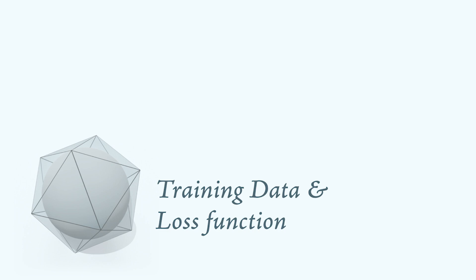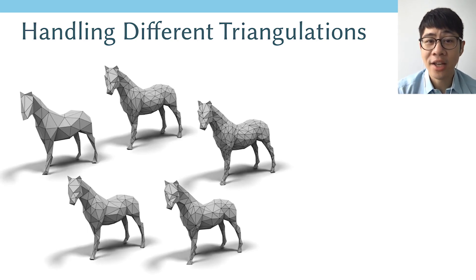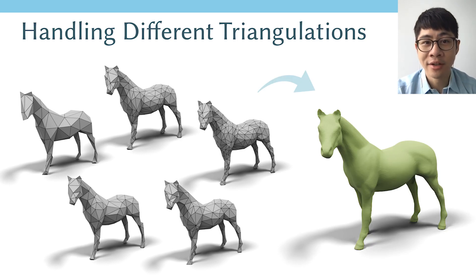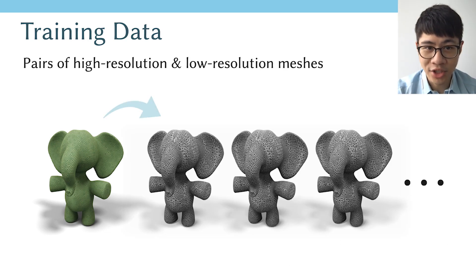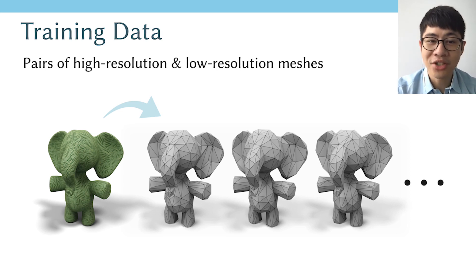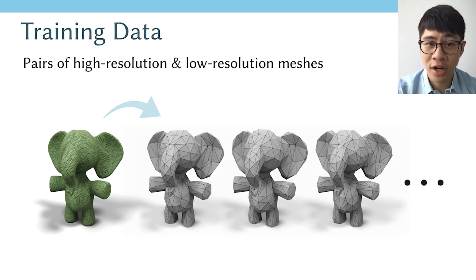Let's talk about the training data and loss function, where we make the network robust to different triangulations. Our goal is that given the same horse with different triangulations, we want the network to subdivide them into a similar-looking high-resolution horse. We achieve this using randomized edge decimation: given the fine mesh in green, we randomly simplify it into many different coarse meshes, creating many pairs of high-resolution and low-resolution meshes as training data. Using a randomized algorithm provides the network with many different coarse triangulations so it can learn to be robust.